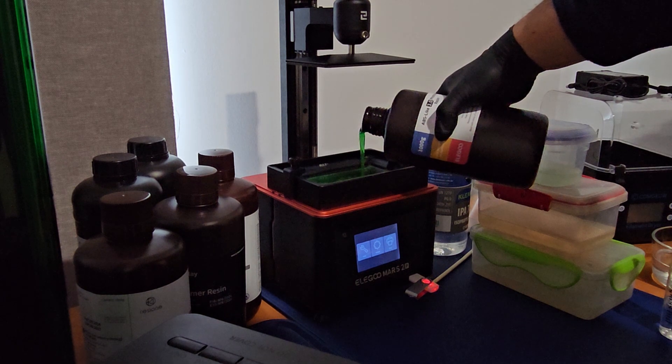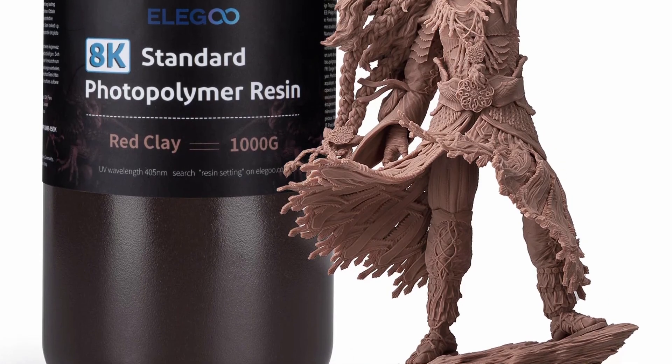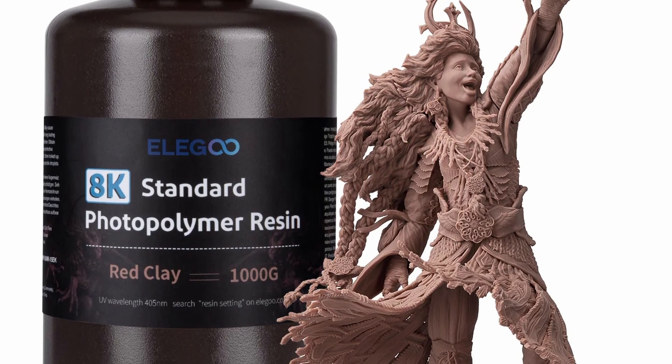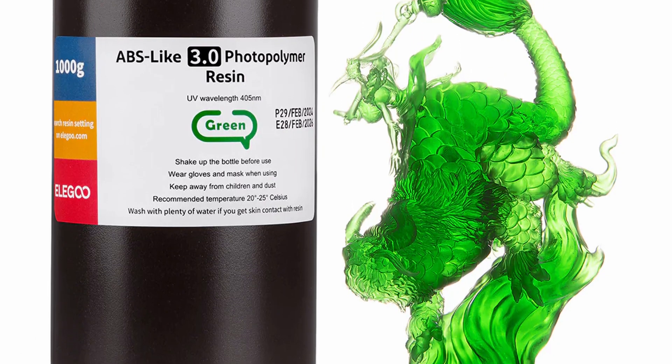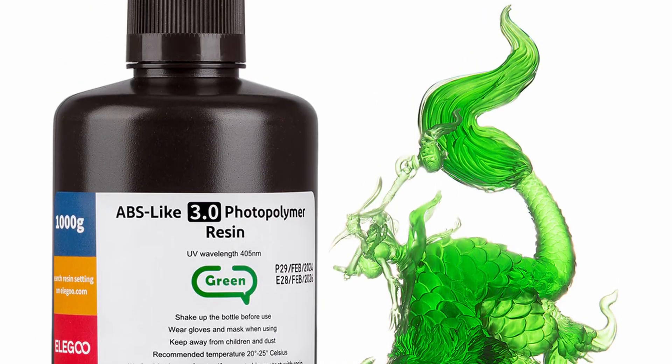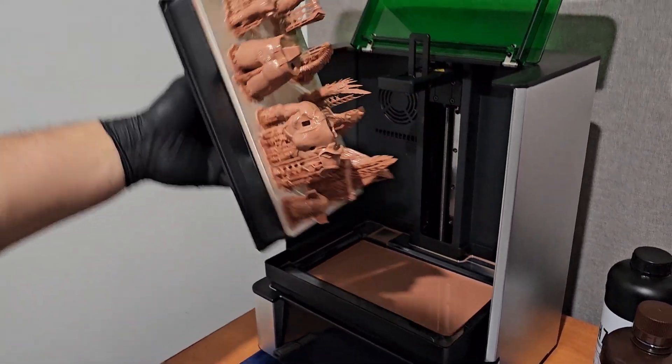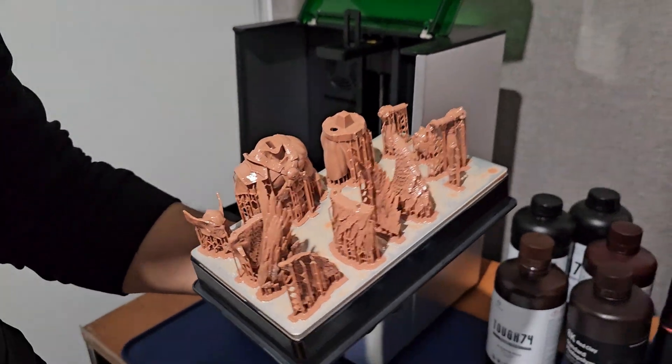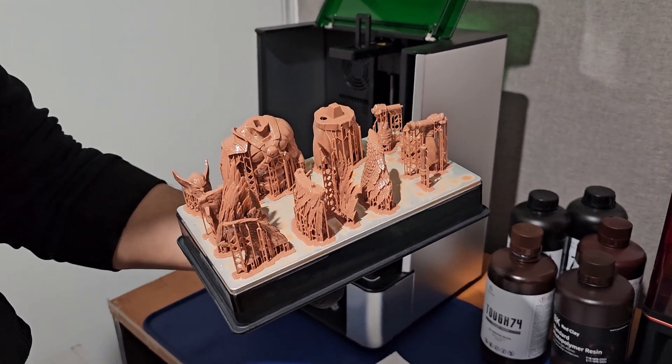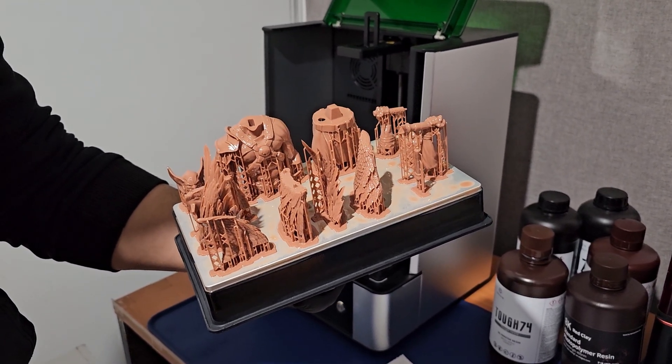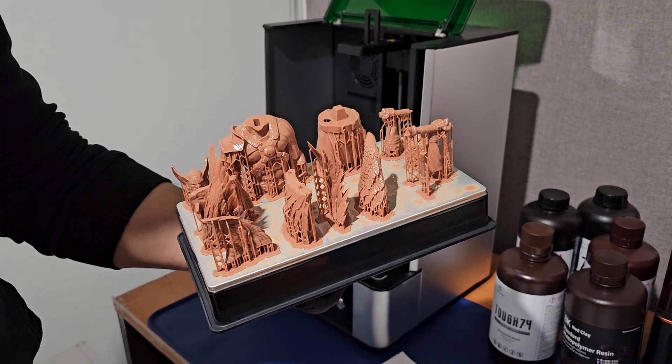Elegoo have sent us the Elegoo 8K resin in the red clay colorway, Elegoo ABS-like 3.0 in the translucent green colorway, and the Elegoo resin detergent. We will take a look at how these resins will work for different action figure use cases and if we can use these to print out full action figures. We will also review how the detergent works for our resins.